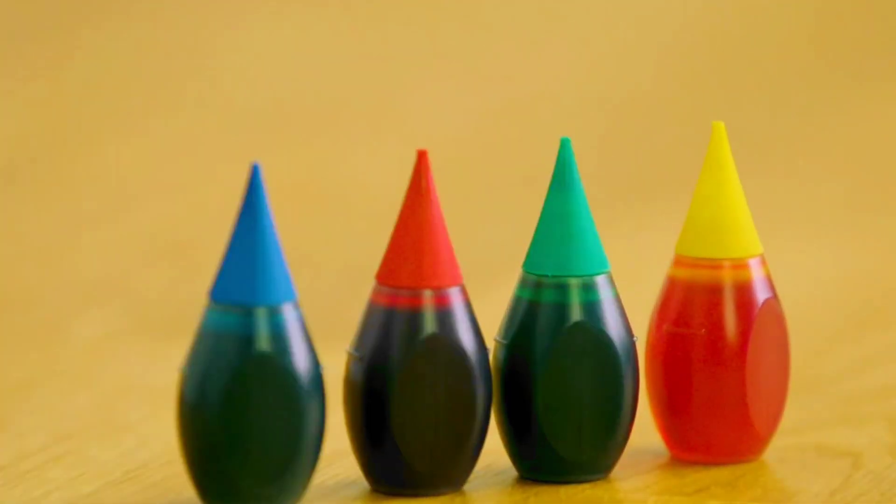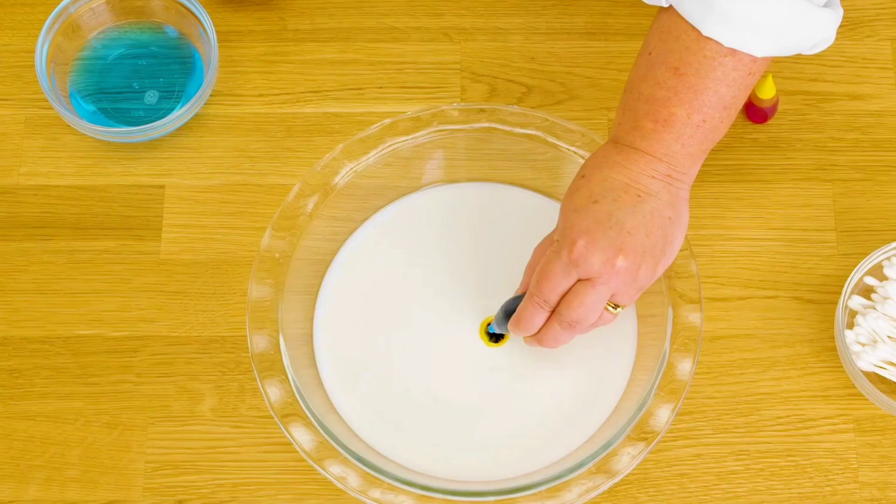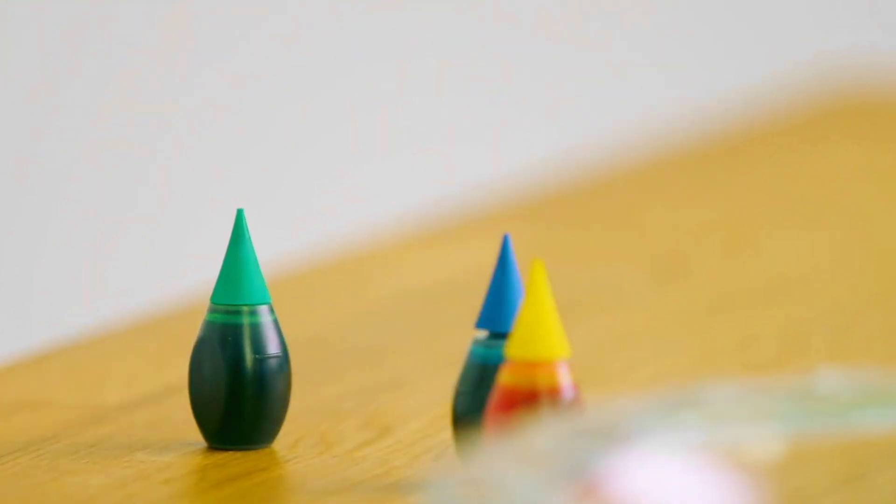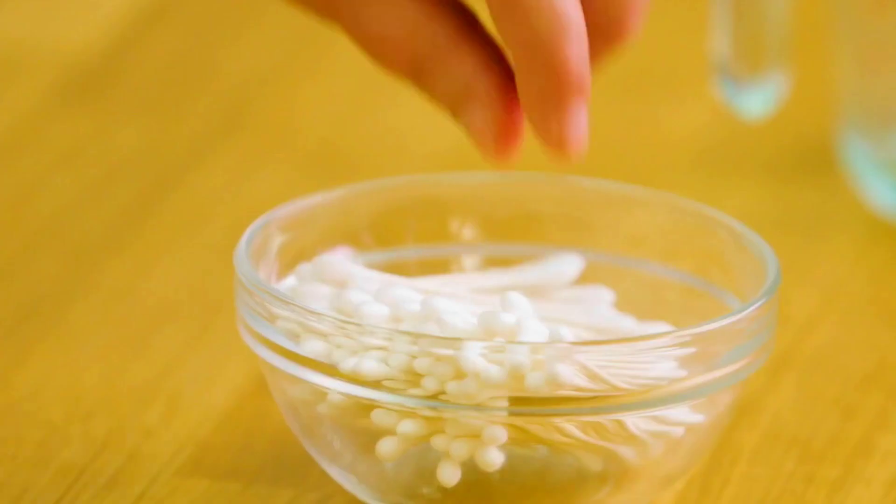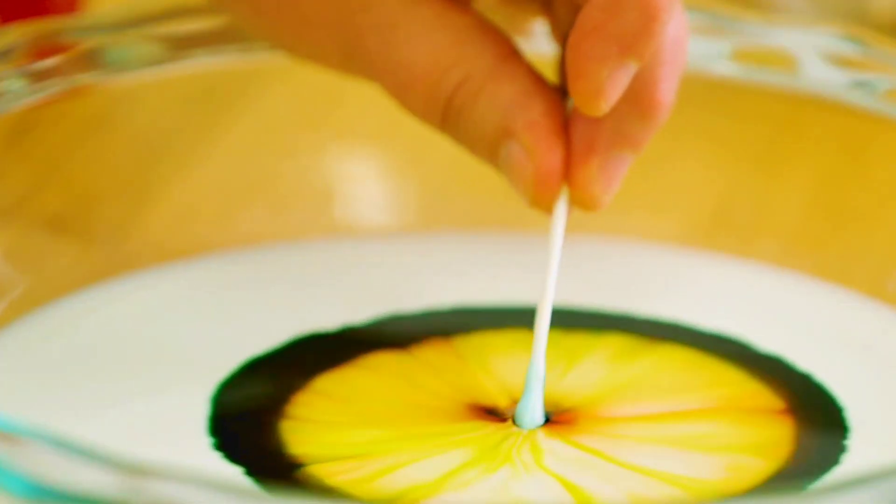Start by pouring a thin layer of milk into the dish, ensuring it covers the bottom. Next, add a few drops of different colors of food coloring to the milk, but don't mix them. Now comes the magical part. Dip a cotton swab into some dish soap and gently touch it to the center of the milk.